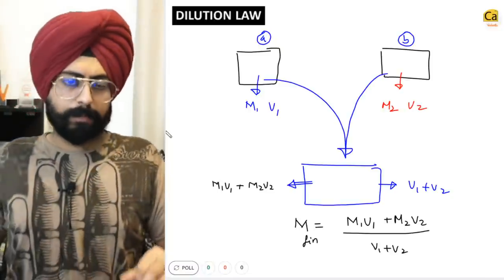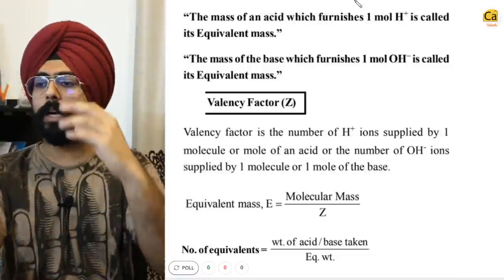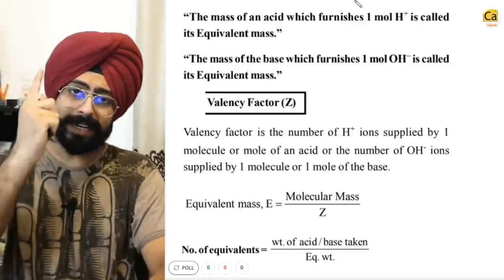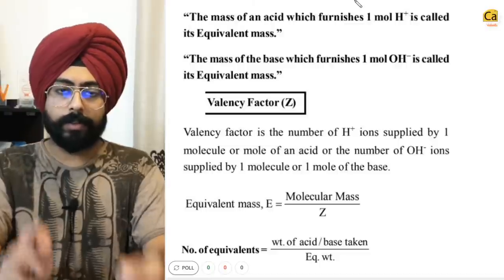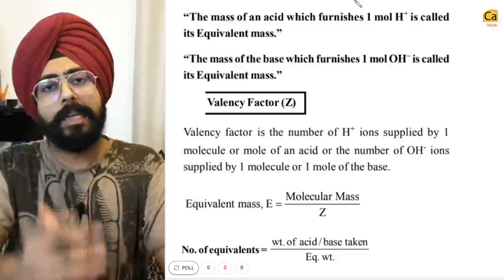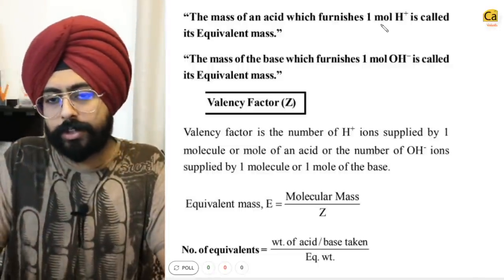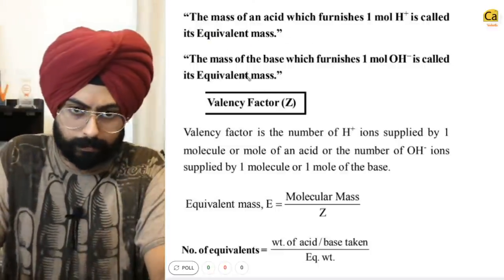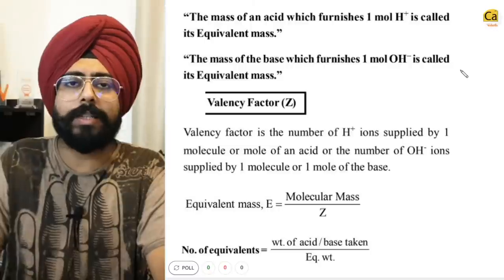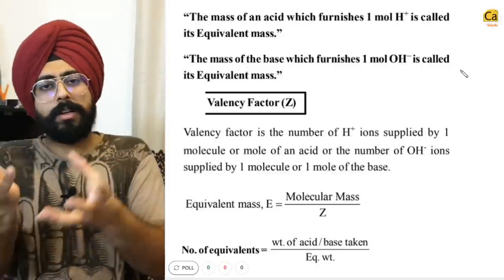We now move to the equivalent concept. It's simple to understand. When we take H₂SO₄, one mole of that acid gives two moles of H⁺. So one equivalent of acid is that amount which gives one mole of H⁺. Half a mole of H₂SO₄ gives one mole of H⁺. That's where the definition of equivalence comes in. The mass of an acid which furnishes one mole of H⁺ is called its equivalent mass.